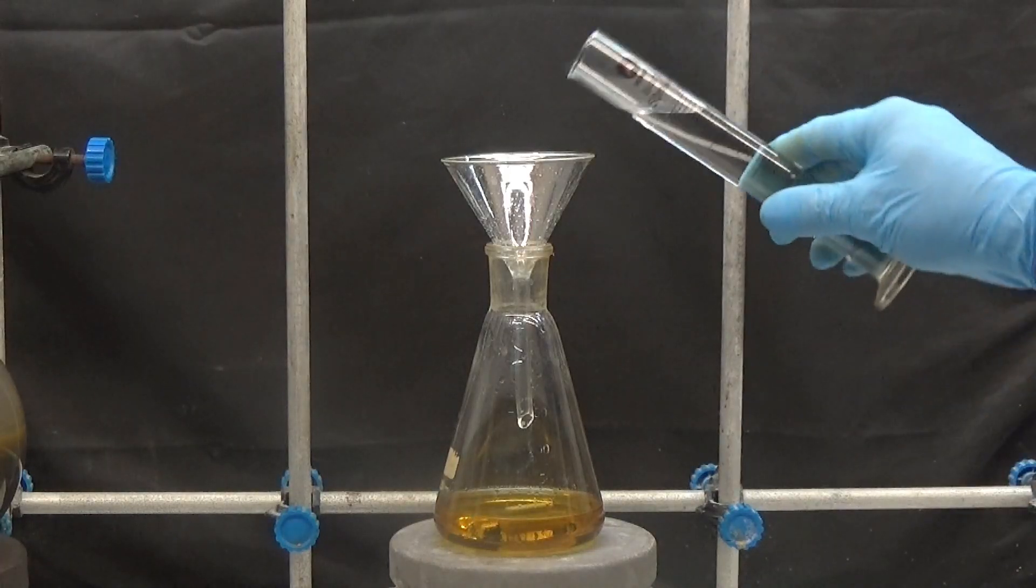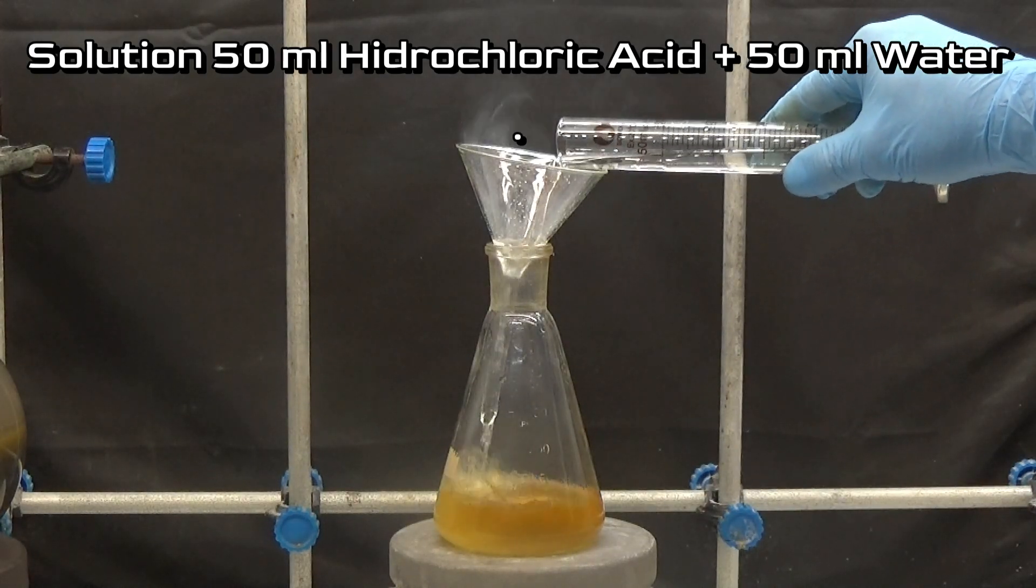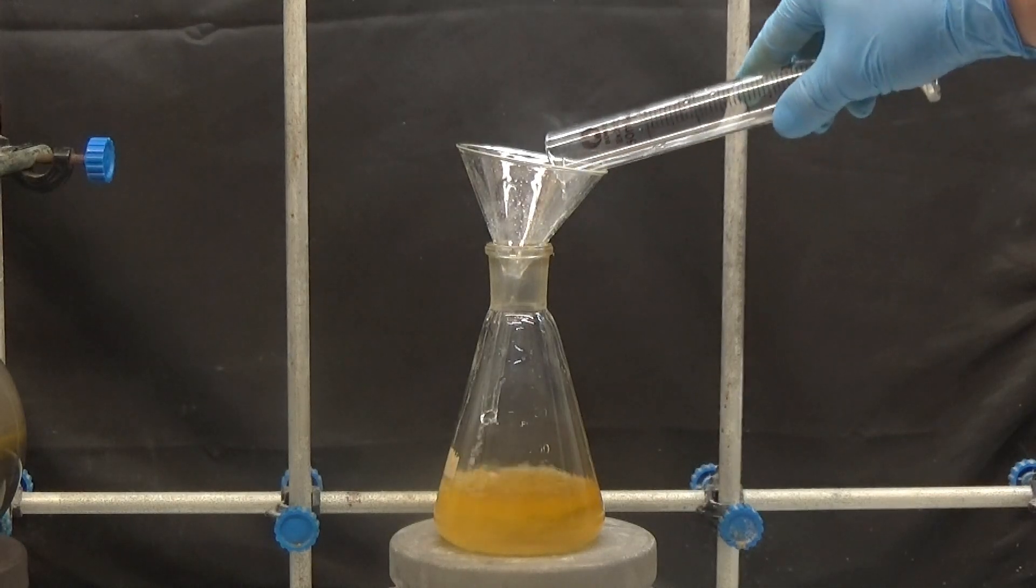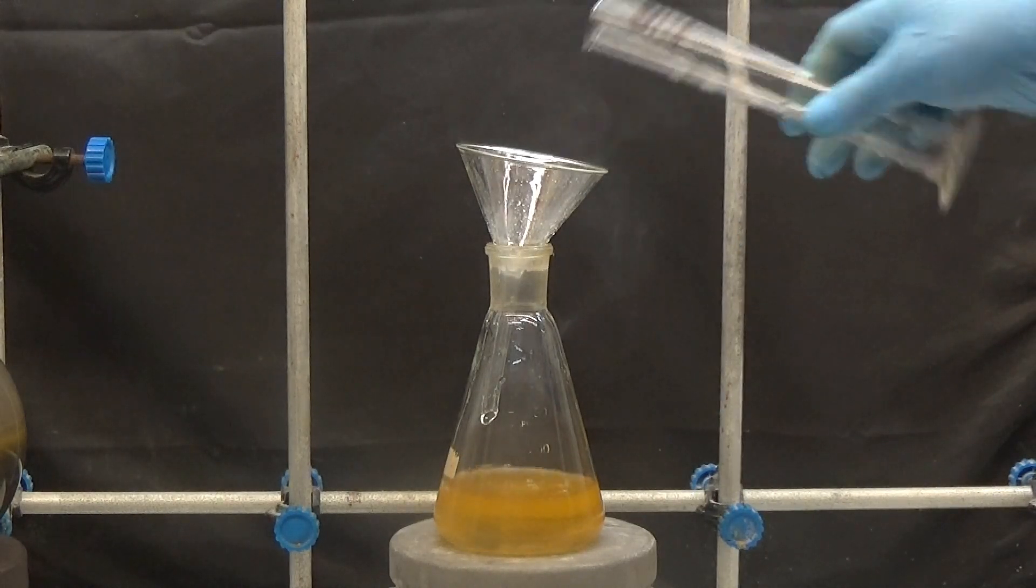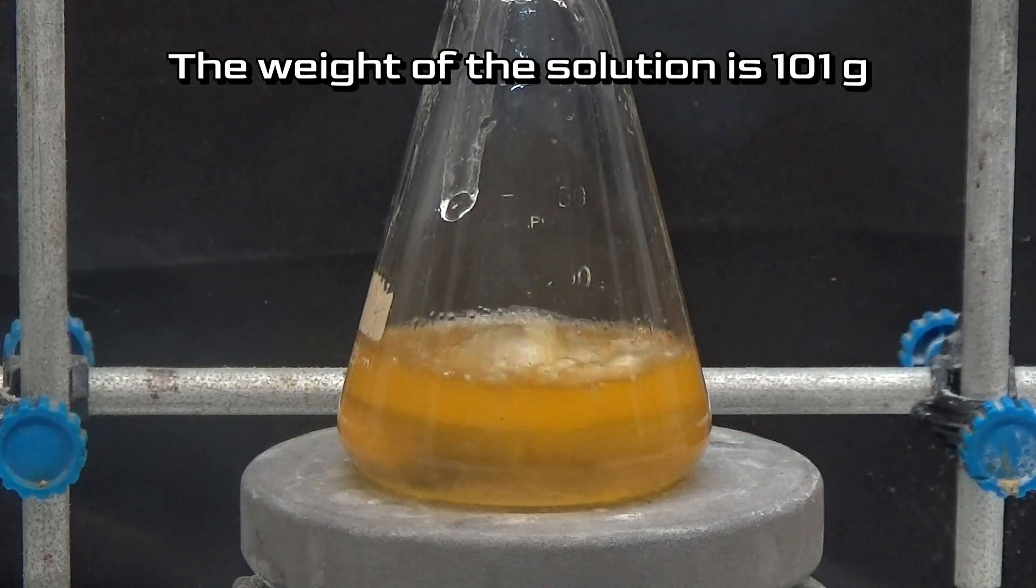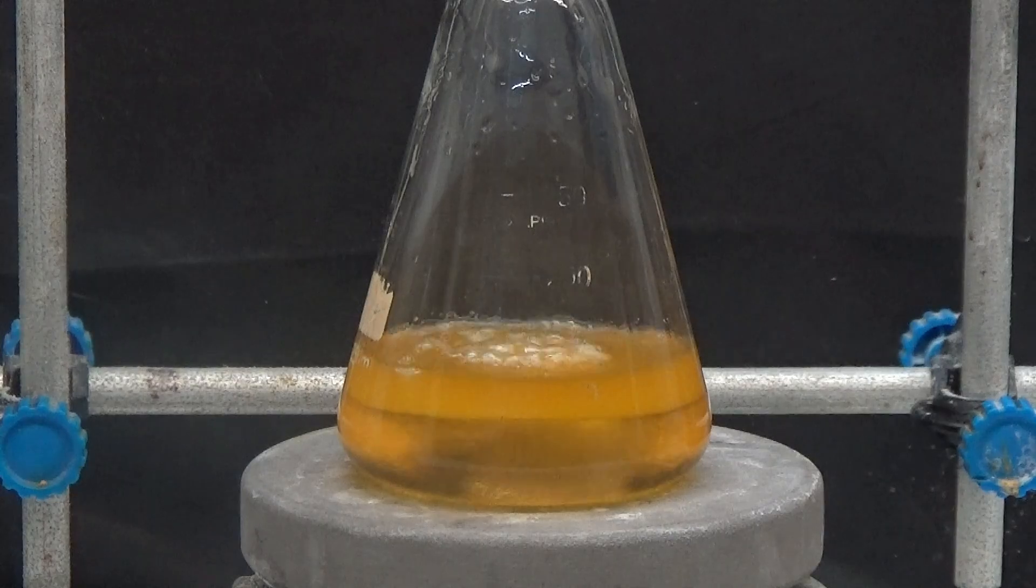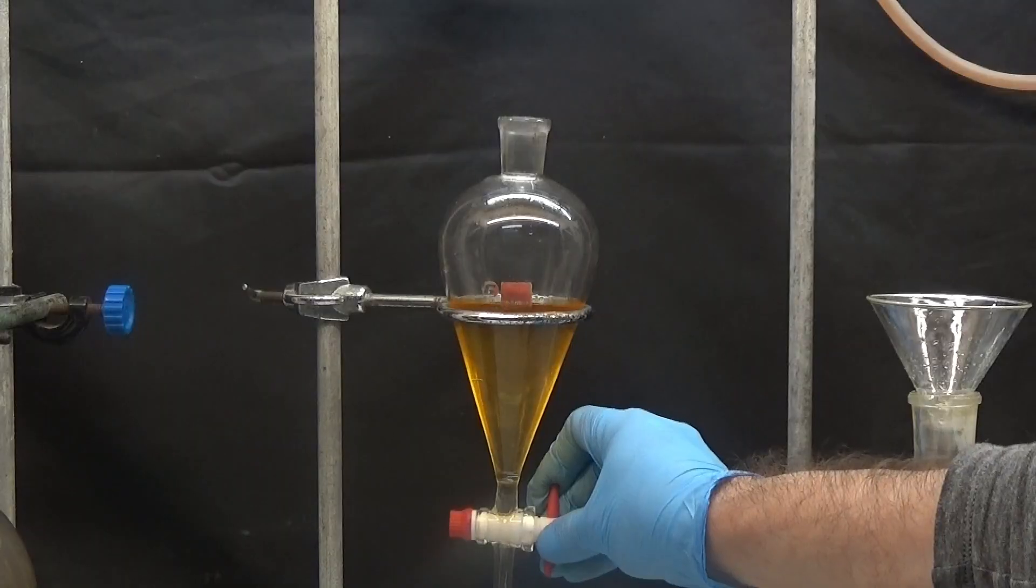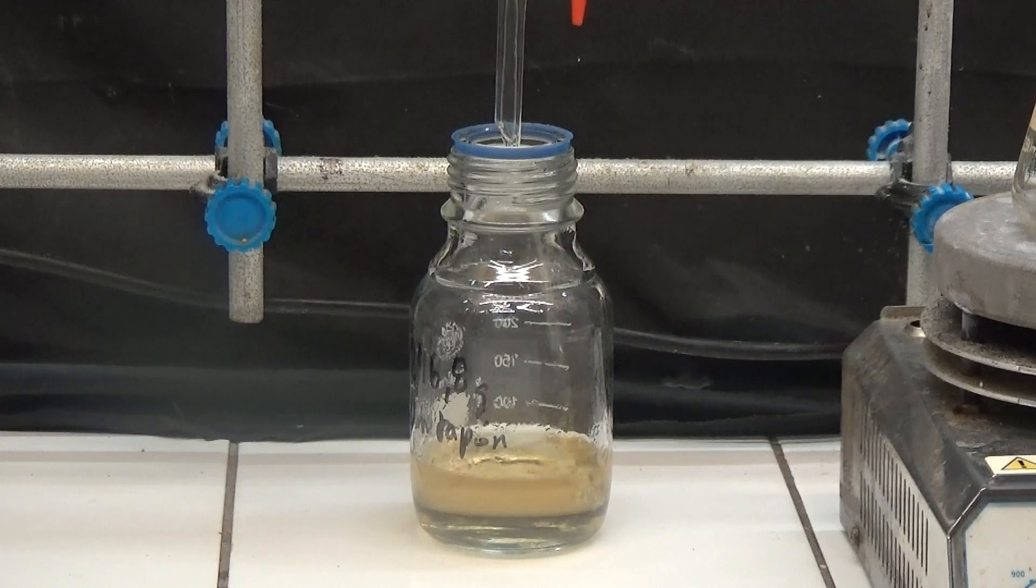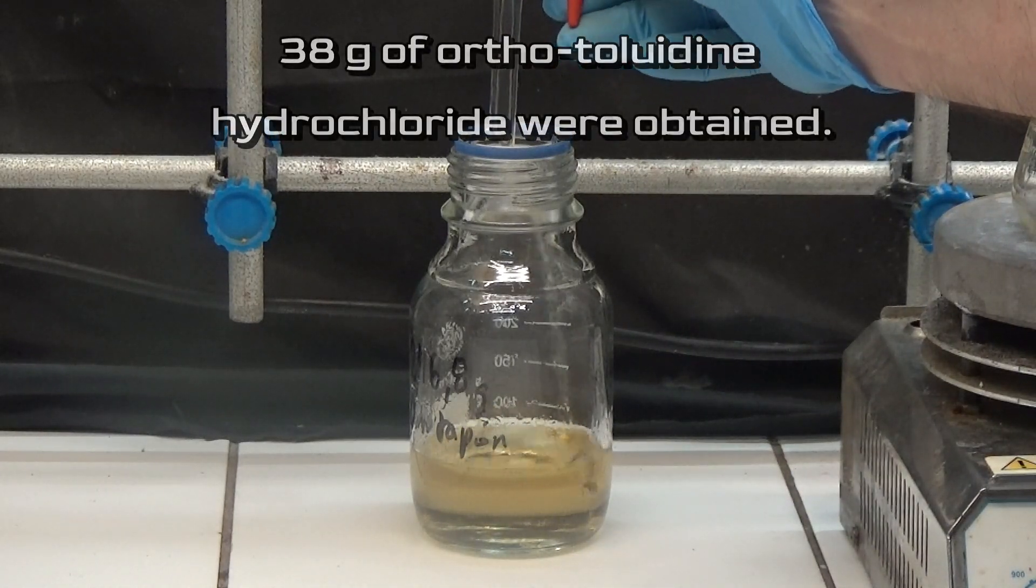Prepare a hydrochloric acid solution by diluting 50 milliliters of water in 50 milliliters of 36% hydrochloric acid. Weigh the solution to know the amount of orthotoluidine hydrochloride that we are going to extract. The weight of the solution is 101 grams. We shake the ether solution twice with 50 milliliters of the hydrochloric acid solution. The total weight of the hydrochloride solution is 139 grams. 38 grams of orthotoluidine hydrochloride were obtained.